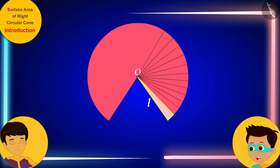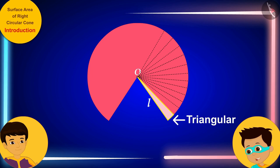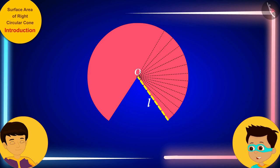then these sliced parts will look almost triangular in shape. And the interesting thing is that the height of each of these is equal to the slant height L of the cone.